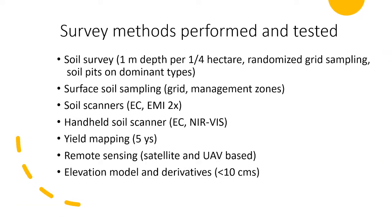During an intensive soil survey, 158 soil cores were taken to 1 meter depth per quarter hectare, based on a randomized grid sampling scheme along with soil pits on the dominant soil types. Several other sampling methods were also tested, like grid and management zone sampling, along with soil EC scanners, handheld soil scanners, standard laboratory measurements, yield mapping, remote sensing, elevation model, and crop varieties.